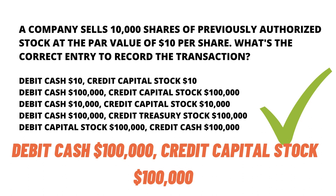Because the company sells 10,000 shares, the cash coming in is 10,000 multiplied by $10, which is $100,000. So you debit cash $100,000, and capital stock will always be credited.